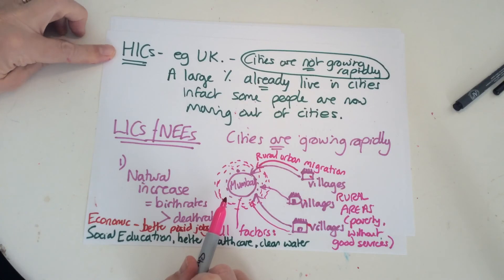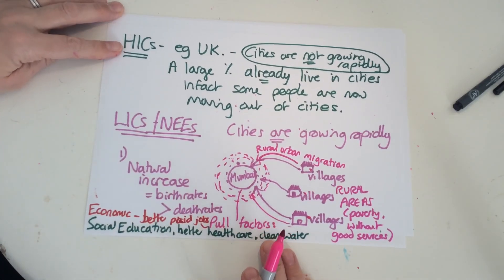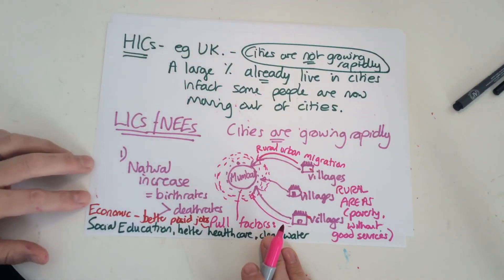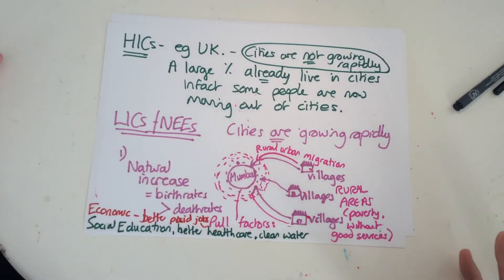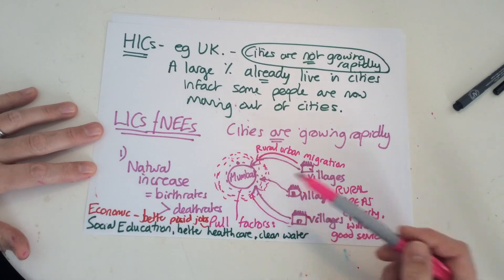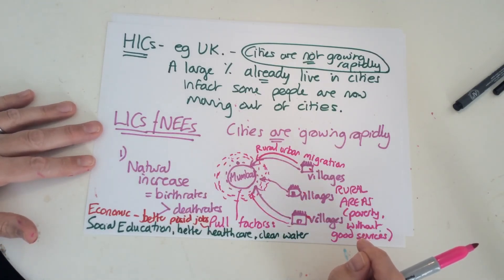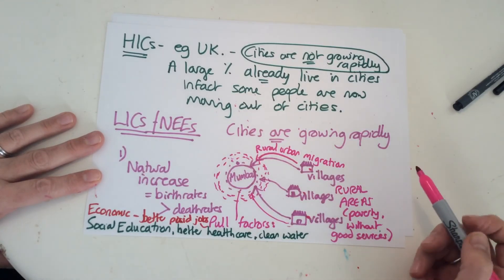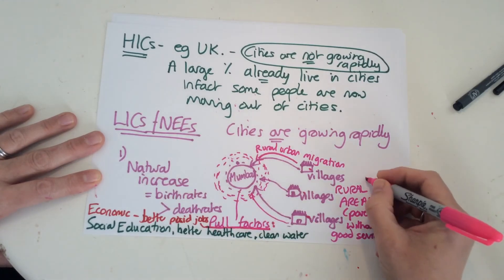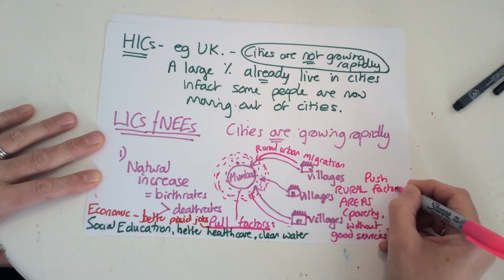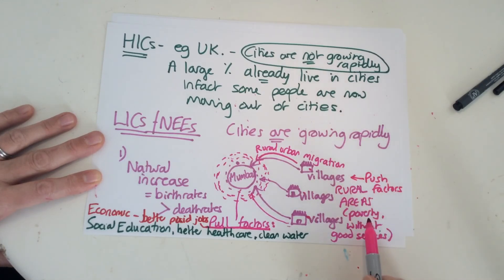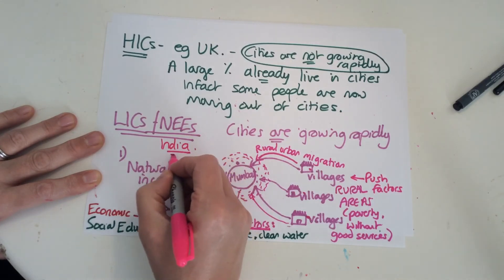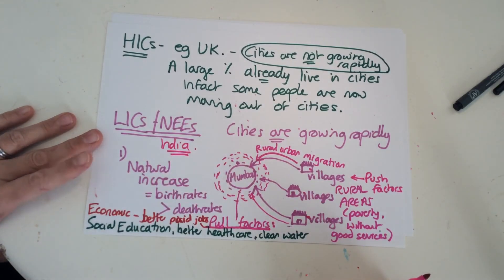To review: in HICs, cities are not growing rapidly — people do move in but they also move out, and we already had a big move during industrialization. In LICs and NEEs such as India and Mumbai, people are moving from villages into the cities looking for better paid jobs, education, better healthcare, and better opportunities for the future. Keywords: pull factors pulling you in, push factors pushing you away — they are often opposites, e.g. poverty versus better paid jobs.